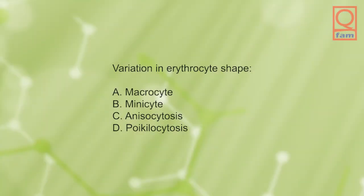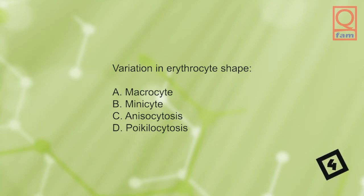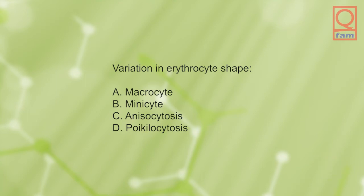Variation in erythrocyte shape: A) macrocyte, B) minocyte, C) anisocytosis, D) poikilocytosis. The answer is D, poikilocytosis.